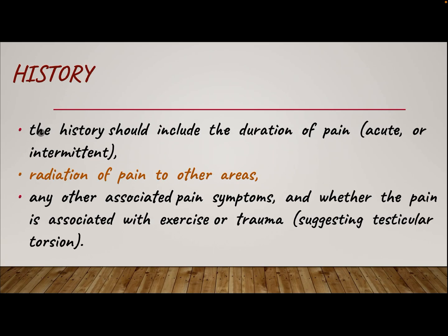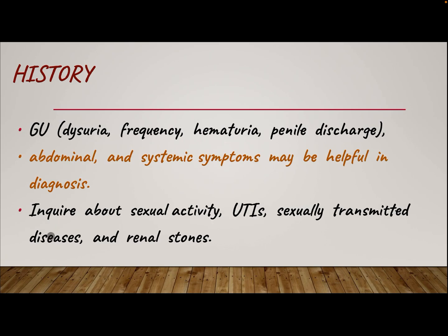History. The history should include the duration of pain — whether acute or intermittent — radiation of the pain to other areas, any associated symptoms, and whether the pain is associated with exercise or trauma, suggesting testicular torsion.